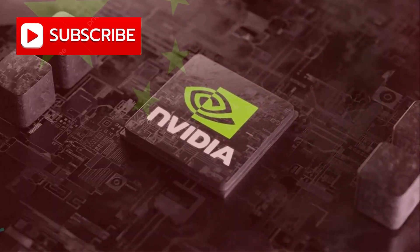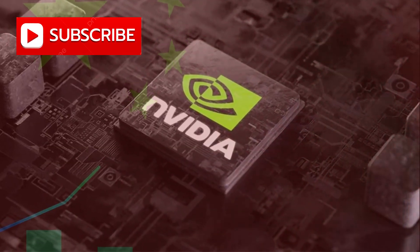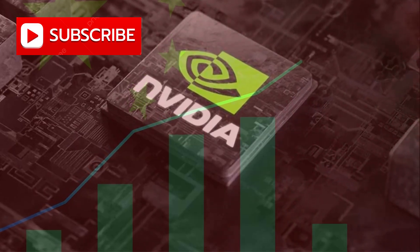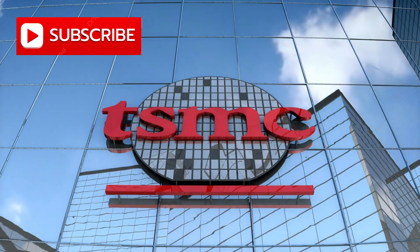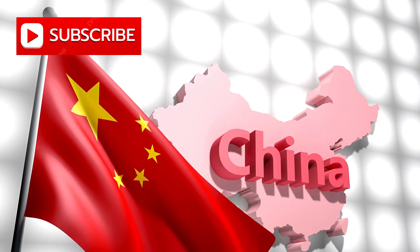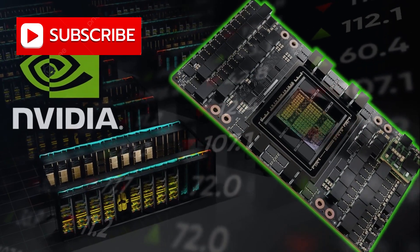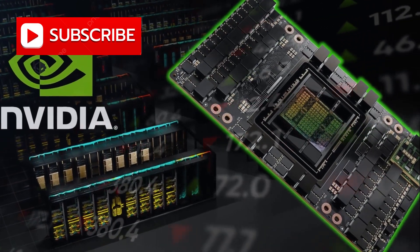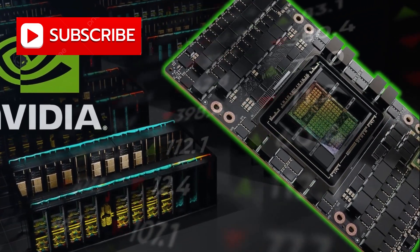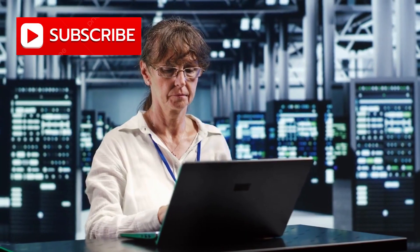There's still a technical gap. Chinese fabs operate at 7nm processes without access to extreme ultraviolet lithography, while Nvidia uses TSMC's 4nm production. But China compensates with clever architecture and massive scale. DeepSeek trained their R1 model using about 2,000 Nvidia H800 GPUs for just $5.6 million, proving that smart engineering beats brute force hardware.